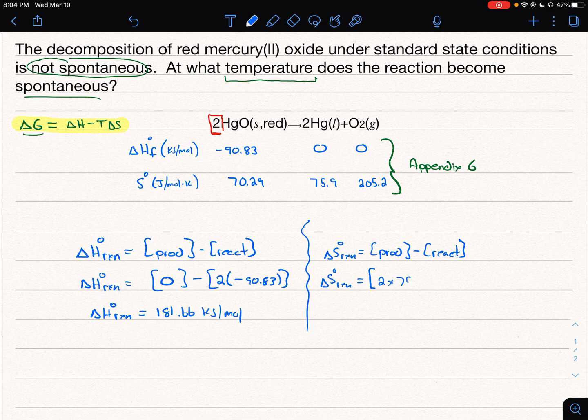So we have 2 times 75.9 plus our O2, 205.2 minus our reactants. And again, there's the 2 coefficient there. So 2 times 70.29. And so if we put all of that into our calculator, watching signs, order of operations, you should be able to get 216.42, and that's joules per mole kelvin.